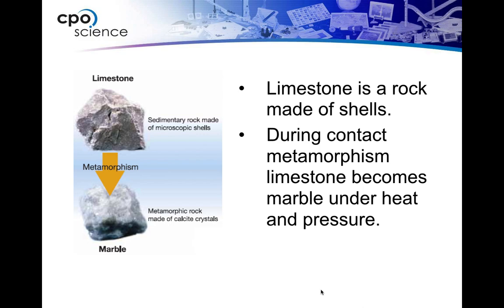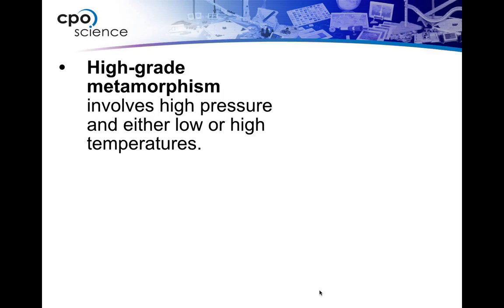Limestone, like we just showed you, is that rock formed from shells — it was a sedimentary rock. When limestone undergoes metamorphism, it will turn into marble. We should all be familiar with marble — think of marble statues. So during contact metamorphism, limestone becomes marble under heat and pressure. It's kind of like baking a cake — you're turning one thing into something else.